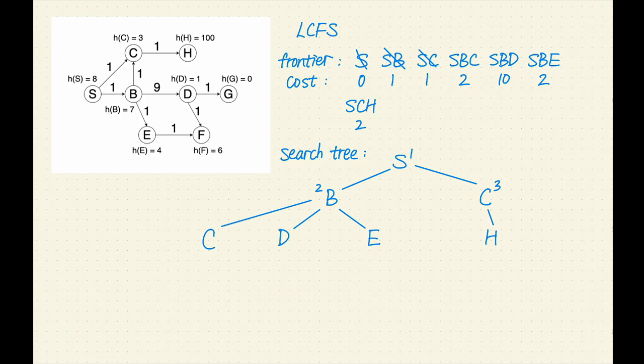In the next few steps, we will explore all the paths with a cost of 2. Sbc, SbE, and Sch have the lowest cost of 2. Based on our tie-breaking rule, let's remove Sbc from the frontier. C is not a goal, let's expand it. C has one successor, H. Let's add Sbch to the frontier with a cost of 3.